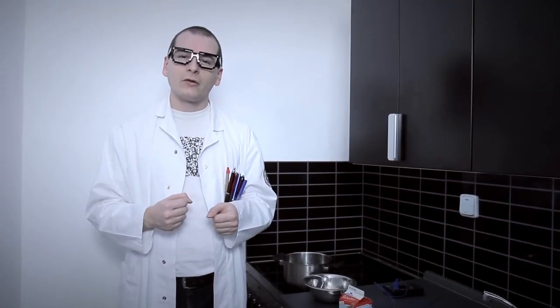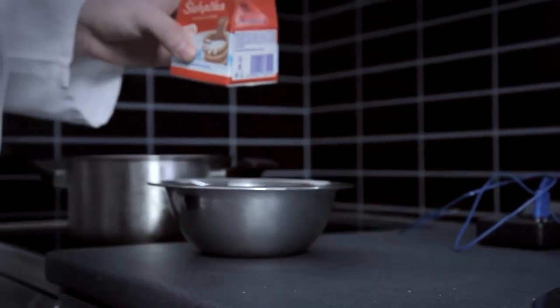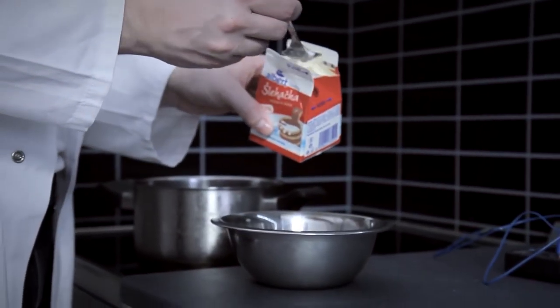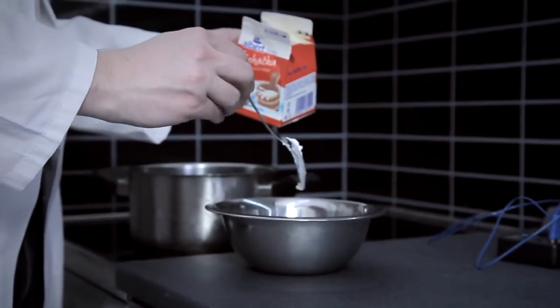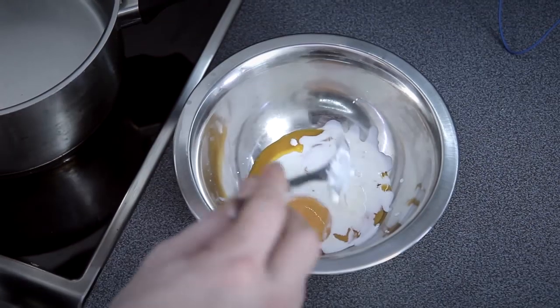Let's start with pasteurizing egg yolks in Bain-Marie. To prevent unwanted firming of yolks due to the heating we have to add whipping cream. The recommended amount of cream is two tablespoons of cream per one egg yolk therefore in our case four spoons of cream.